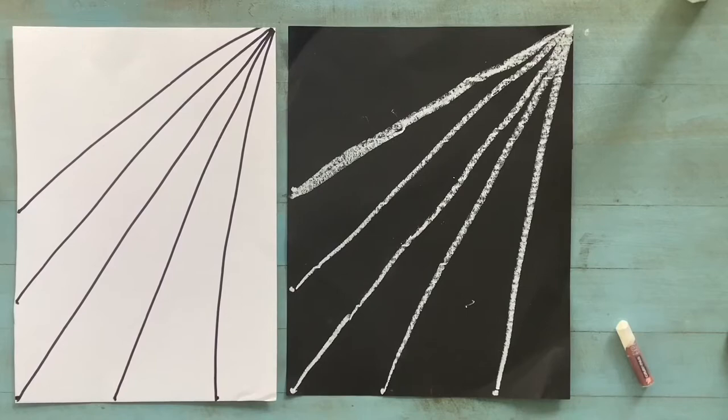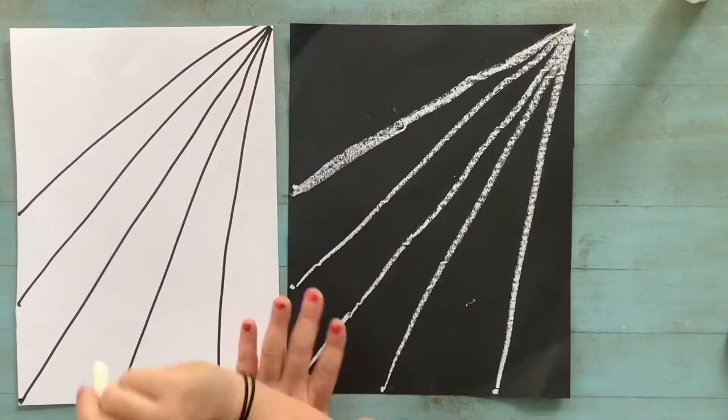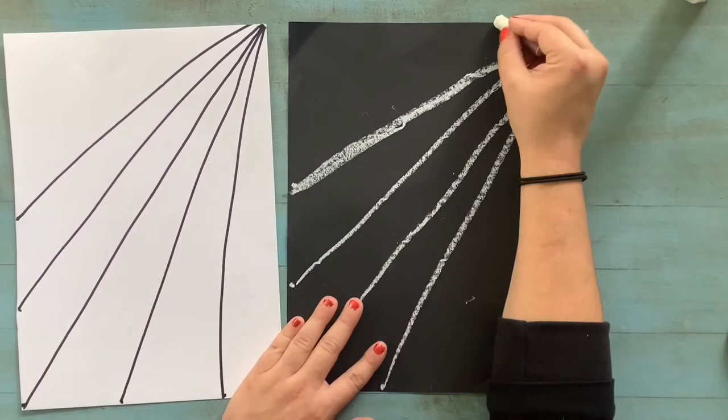Now it's time to show you the two different types of webs that you can do. On this one I'm going to draw a bumpy line and on the white one I'll do a straight line. Your bumpy line should curve towards the corner. I'll show you what that looks like.